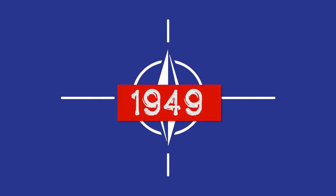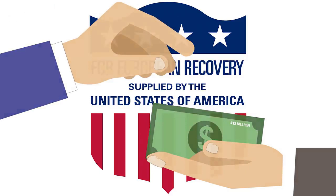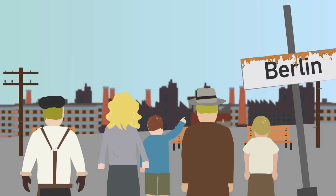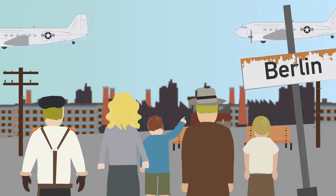How did NATO start? In 1945, the Treaty of Brussels was signed by the UK, Netherlands, Belgium, France, and Luxembourg.